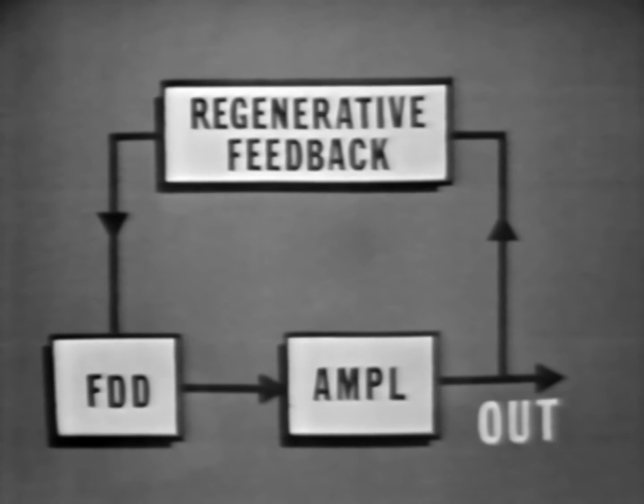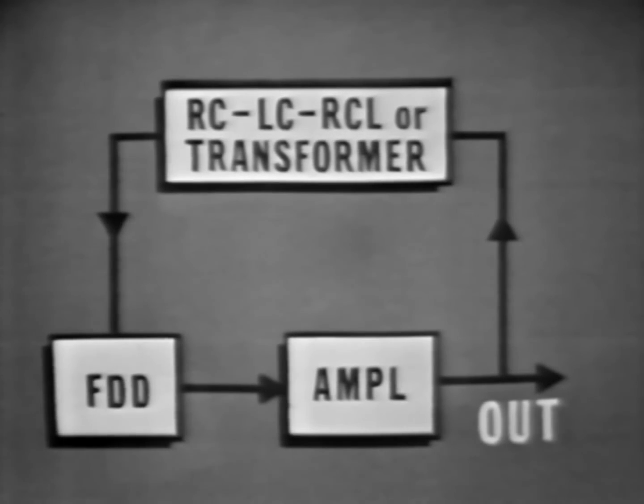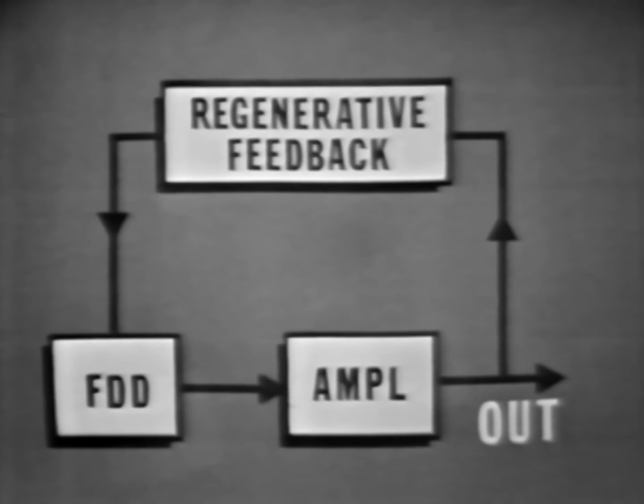Now the way this is usually accomplished is through an amplifier. The frequency determining device provides an input to the amplifier. The amplifier must provide enough gain so that part of the output can be fed back to the input LC circuit to sustain oscillations and, of course, provide enough signal for an output. Now the energy must be fed back in phase or regenerative. Now because many amplifiers shift the phase of the signal by 180 degrees, there may be phase-shifting networks required in the feedback path. Various methods are used: RC, LC, RCL, or transformer between the output and the input. Now which system is used will be determined by the type of oscillator circuit and its application. The important thing is that the energy fed back be in phase with the signal generated by the frequency determining device.